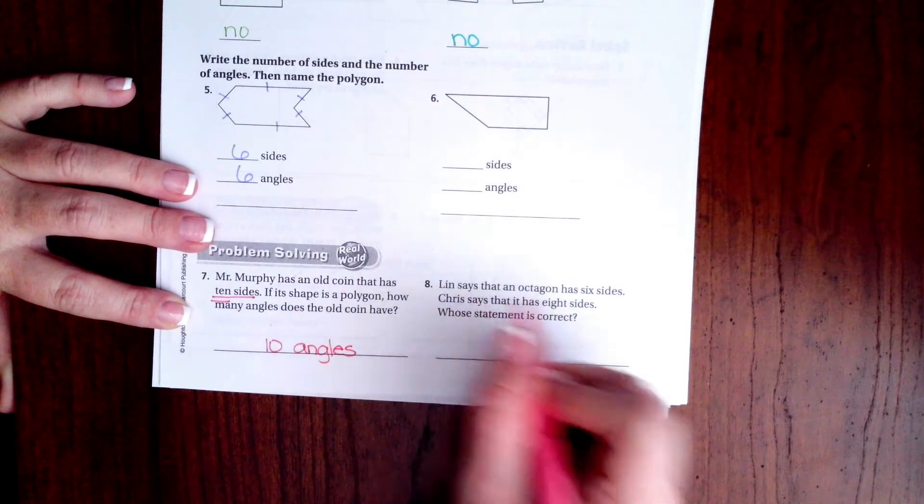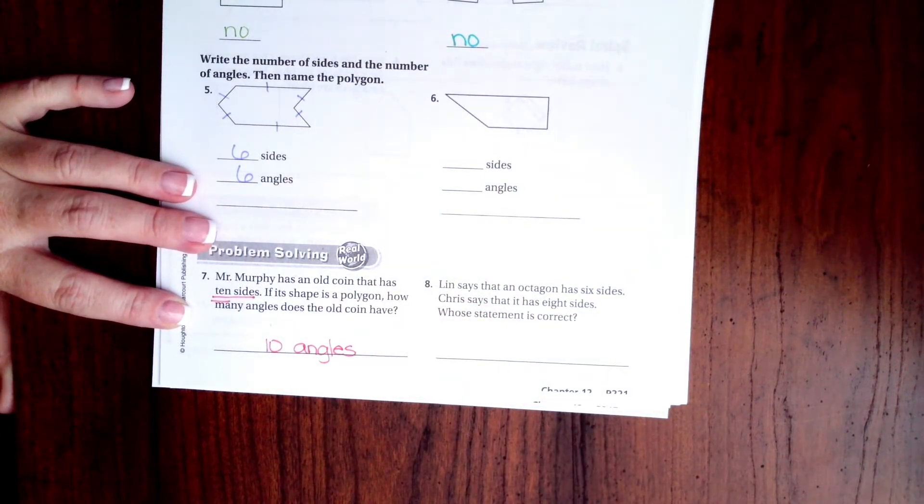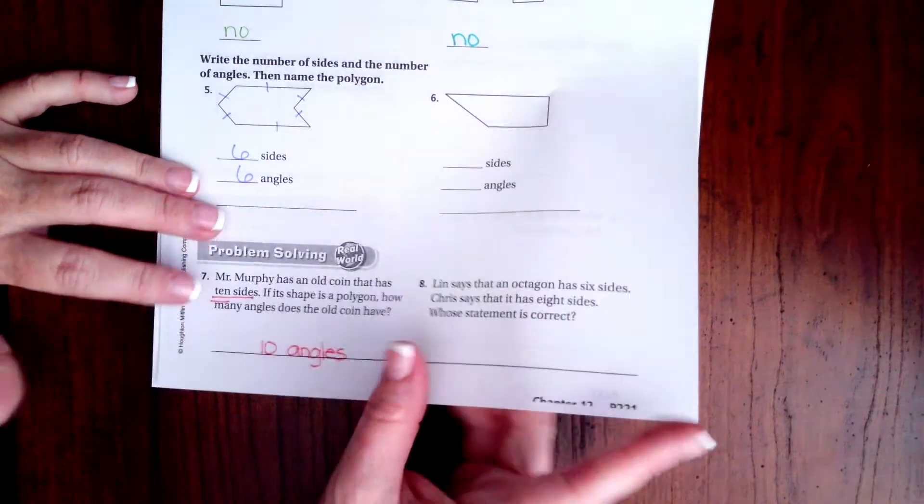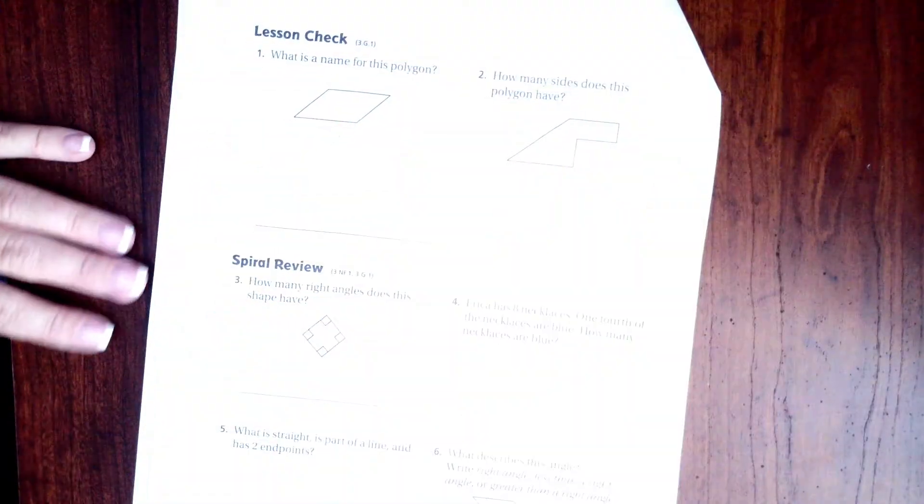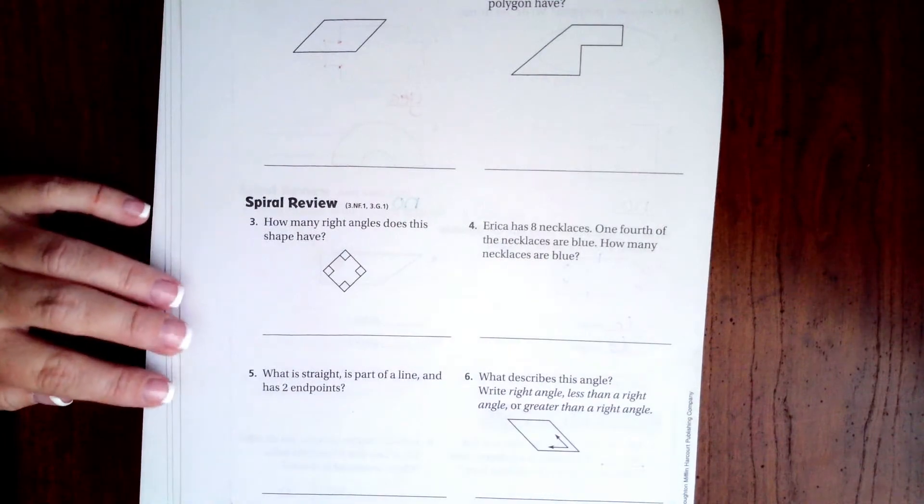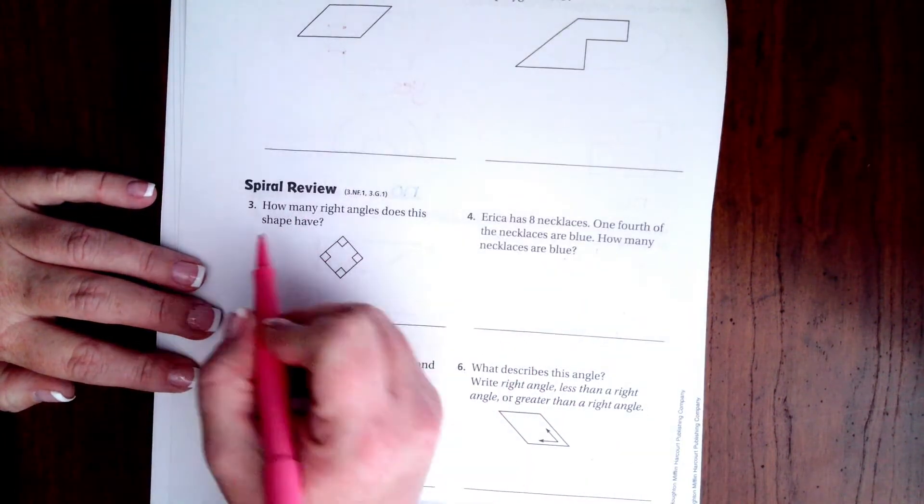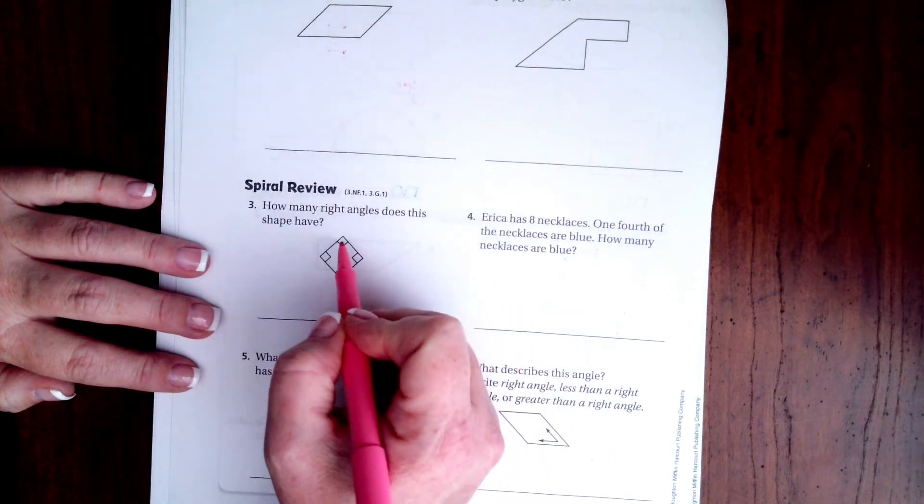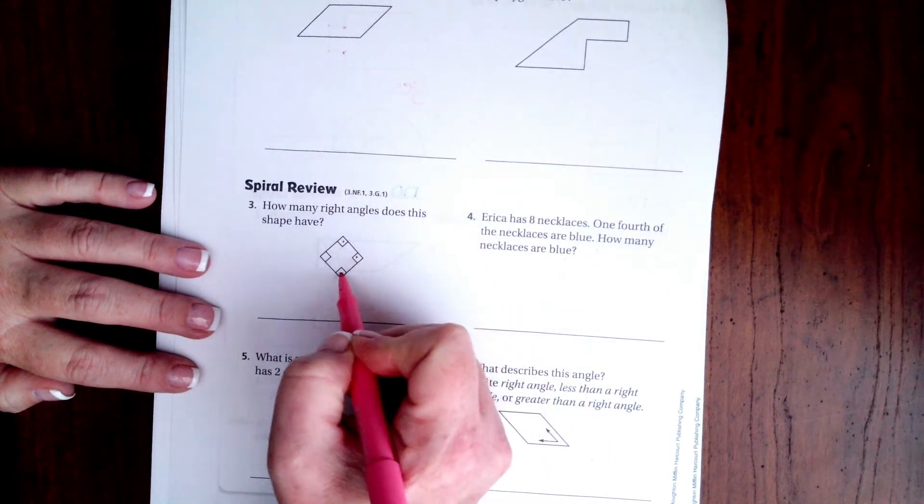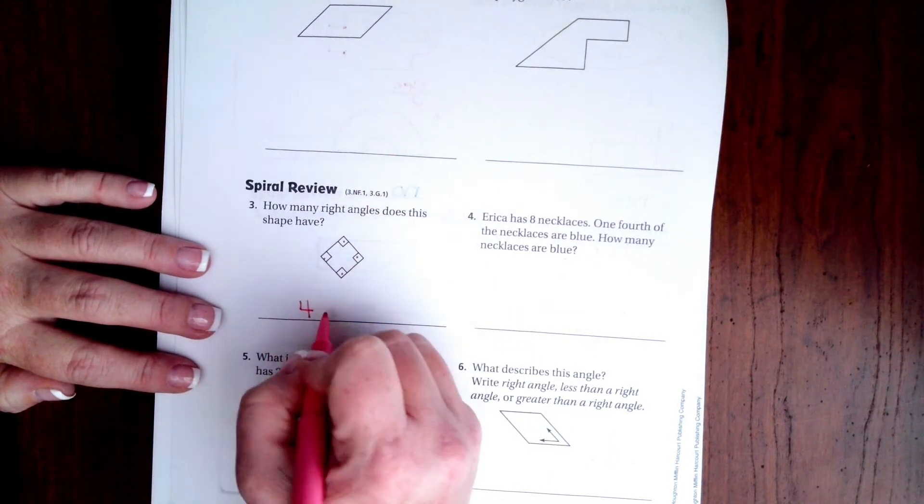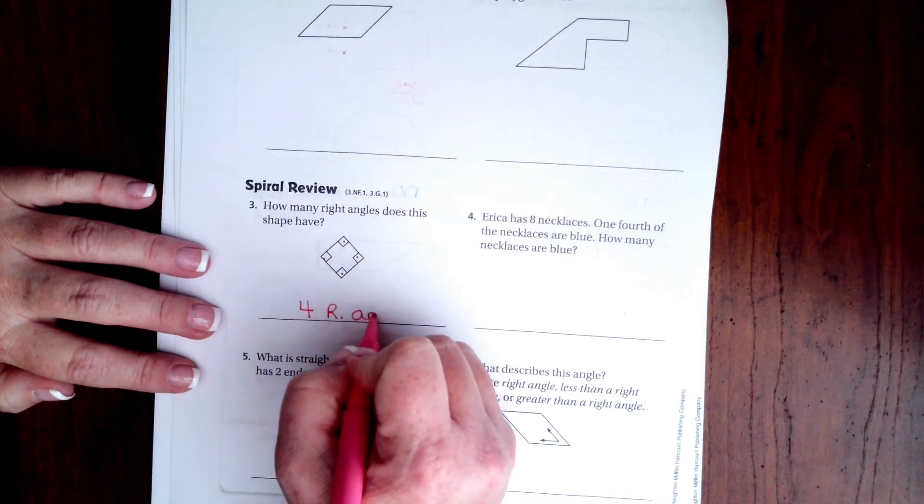You guys go ahead and do number eight, and then we're going to go over onto the back where you guys are going to do the lesson check just like always. And I am going to come down here and do the spiral review. How many right angles does this shape have? Well, if you just count the boxes, one, two, three, and four. Four right angles.